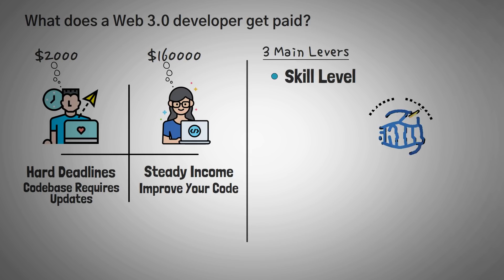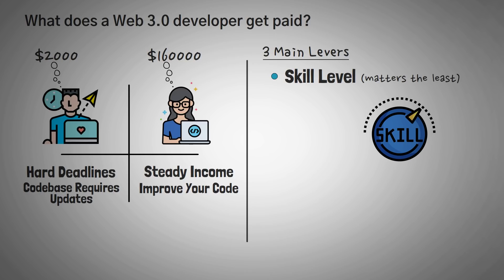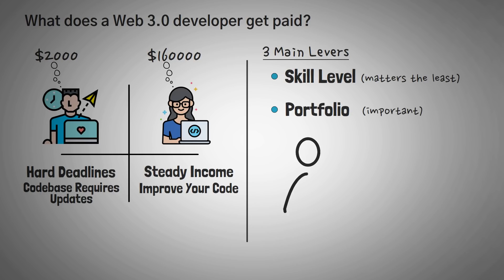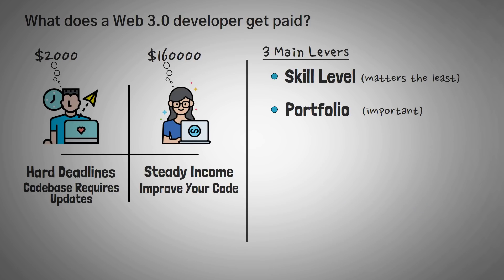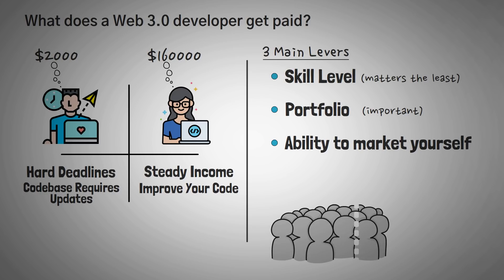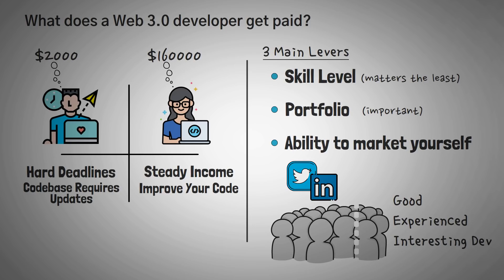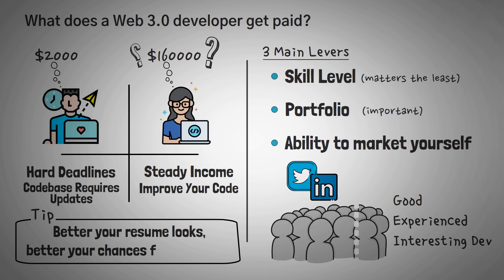The first lever is your skill level — how good of a developer you are. Surprisingly, this one matters the least; you just have to be good enough to land the job. Second is the list of projects you've worked on and can show, like a portfolio — most employers won't want to take a chance on a new developer when they could pay a little more for an experienced one. The third and most important lever is your ability to market yourself. A large percentage of people who got Web3 jobs got them from Twitter or LinkedIn.